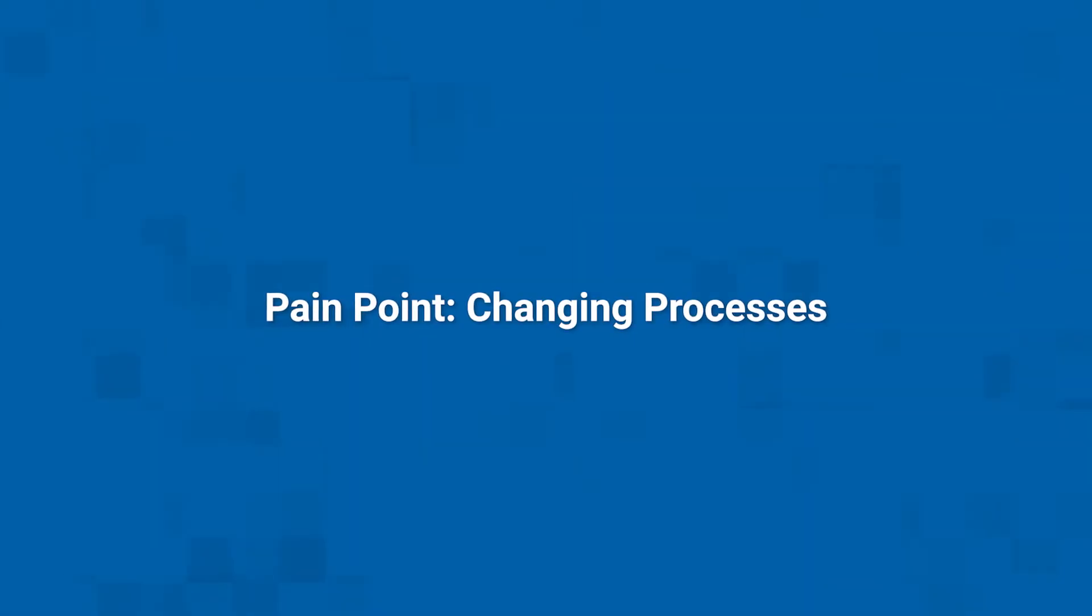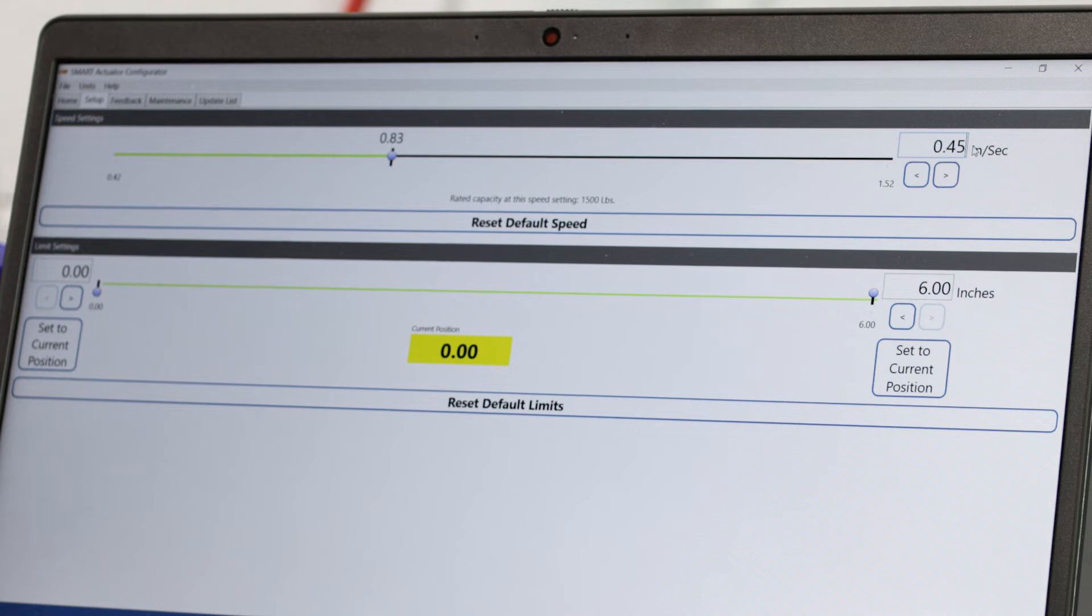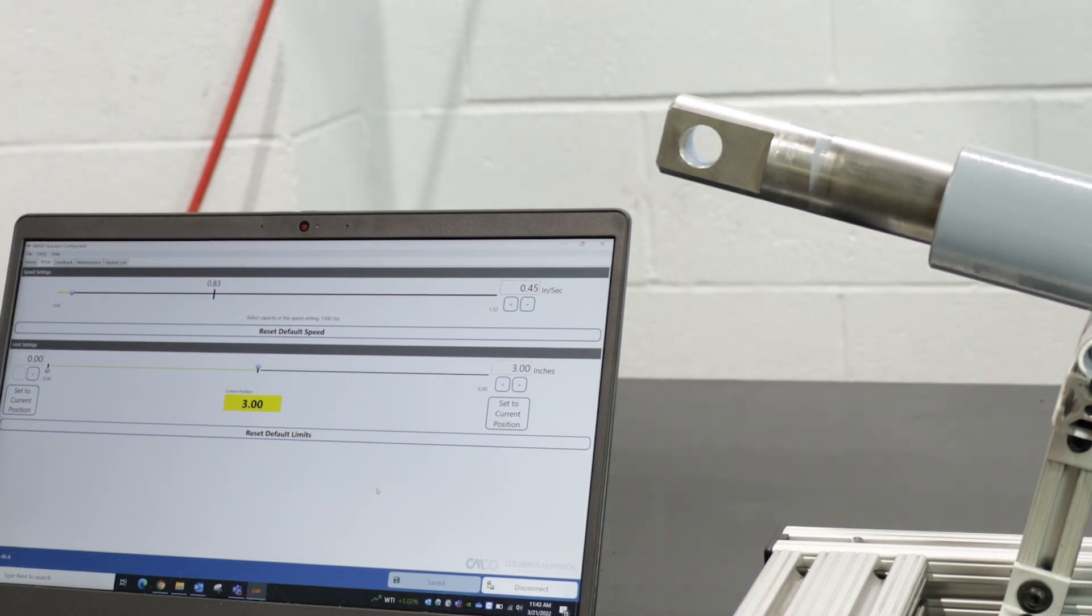Sometimes there is a need to adjust parameters to meet changing process needs. Using the configuration software, you can easily modify the smart actuator speed and other parameters to compensate for changes while the actuator is operating.